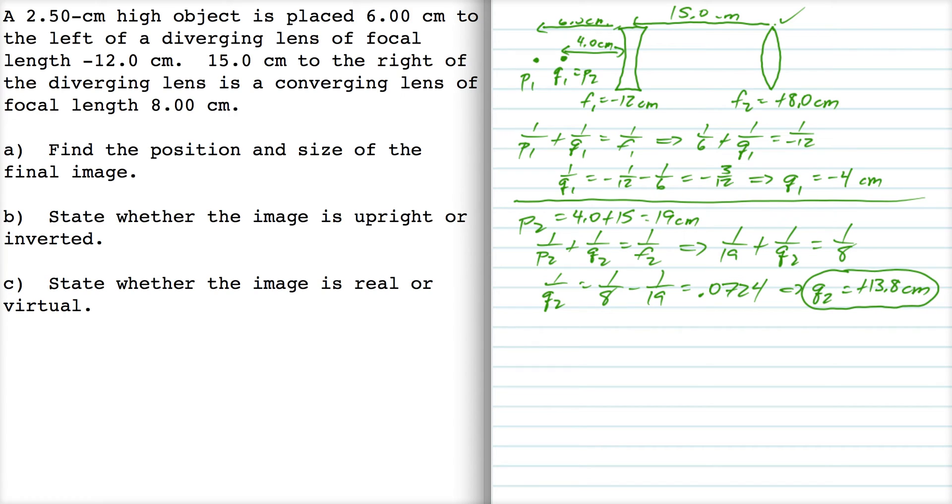So there's the position of the final image. Now as far as the size is concerned, we've got to do the magnifications. So M1 is minus Q1 over P1. So that's minus negative 4 over 6. So that's 0.667.